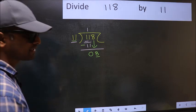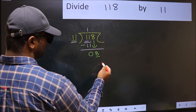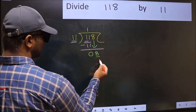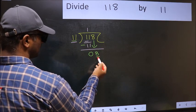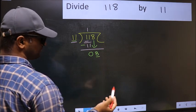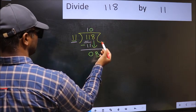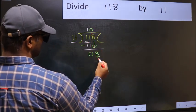what you should think of is which number should we take here. If I take 1, we will get 11, but 11 is larger than 8. So what we should do is take 0. So 11 into 0 is 0.